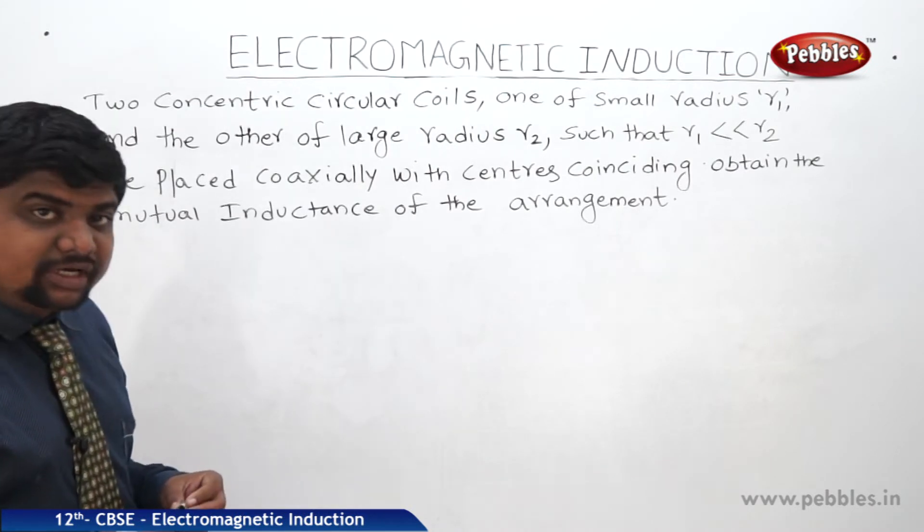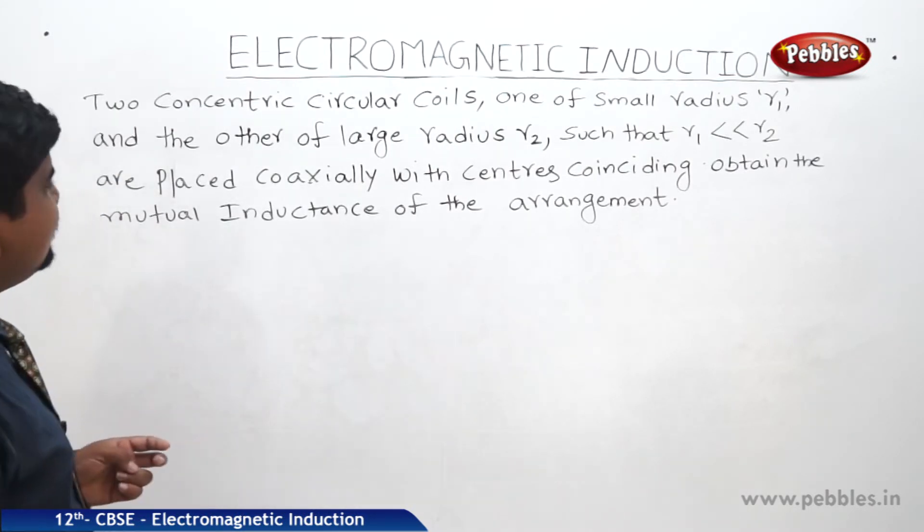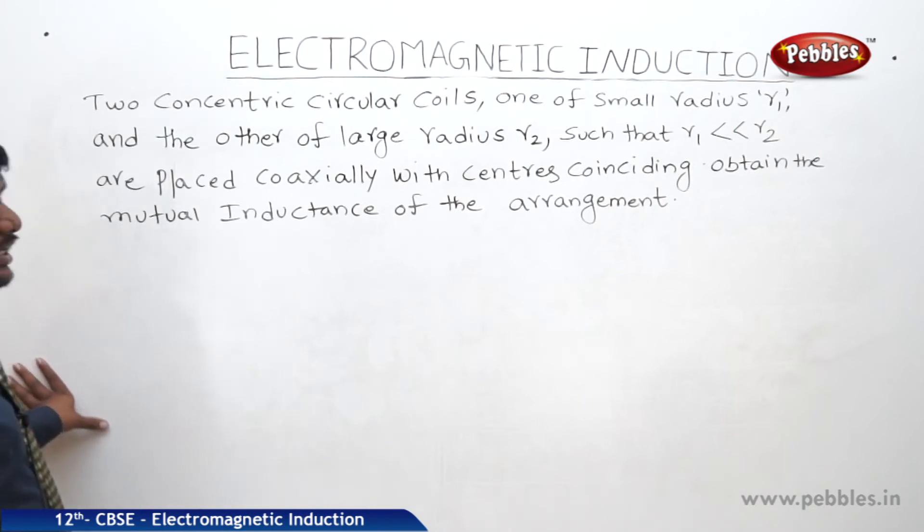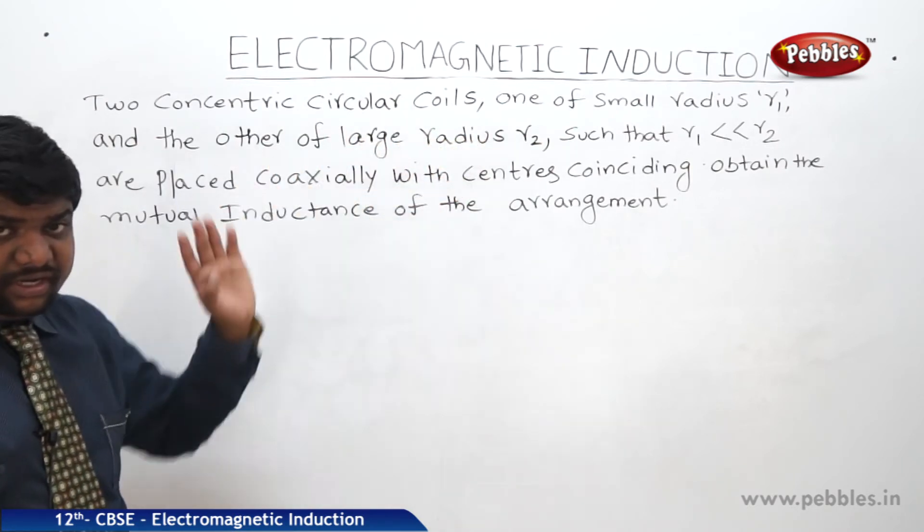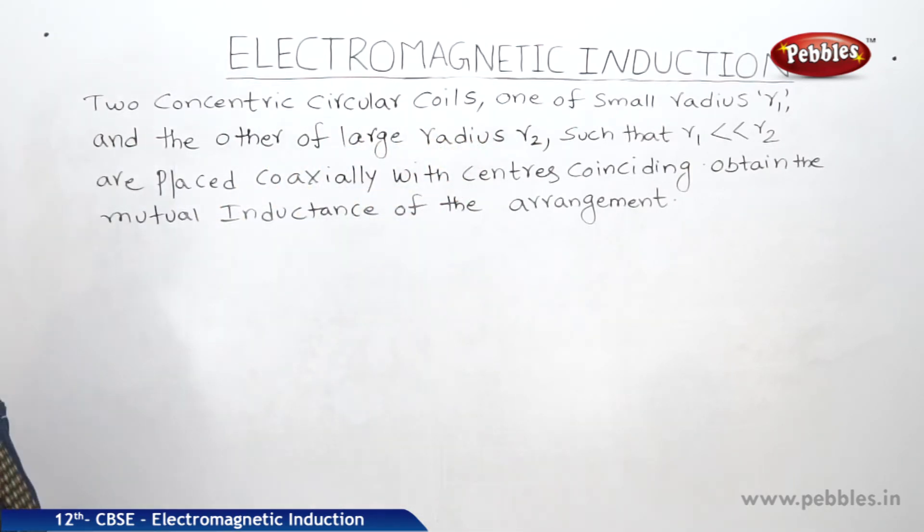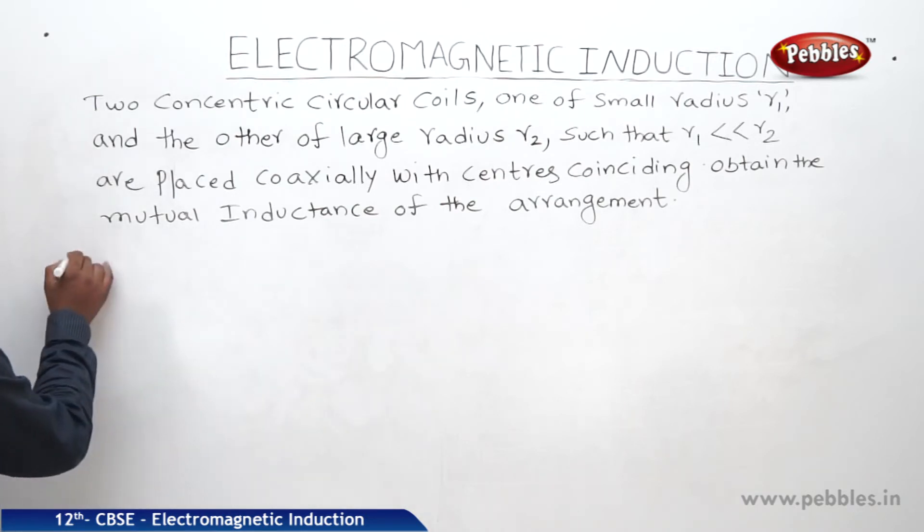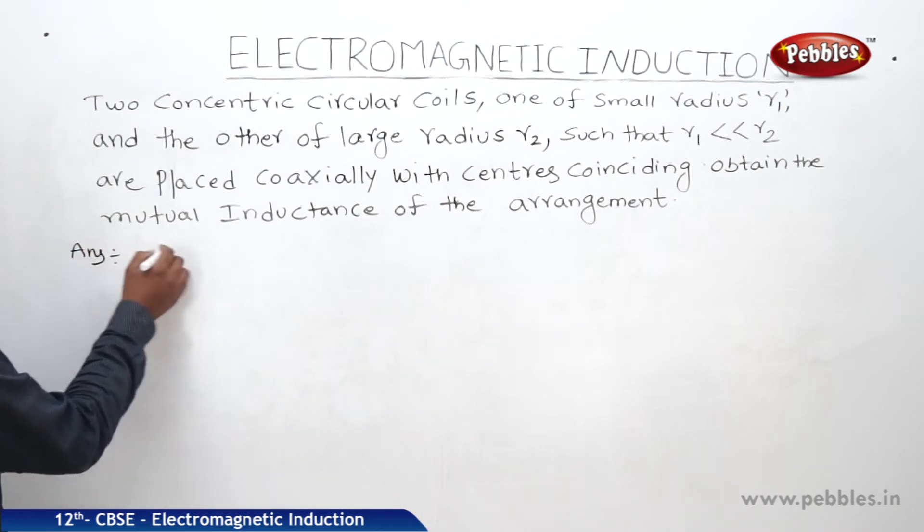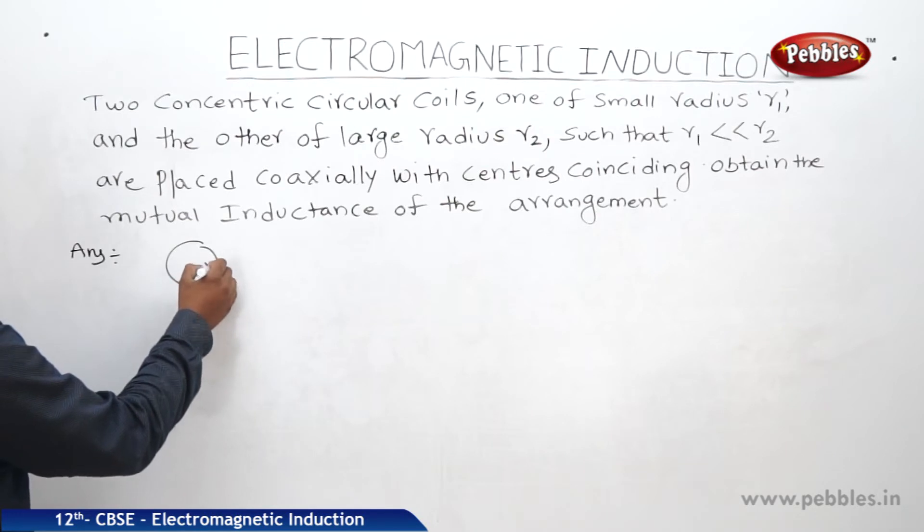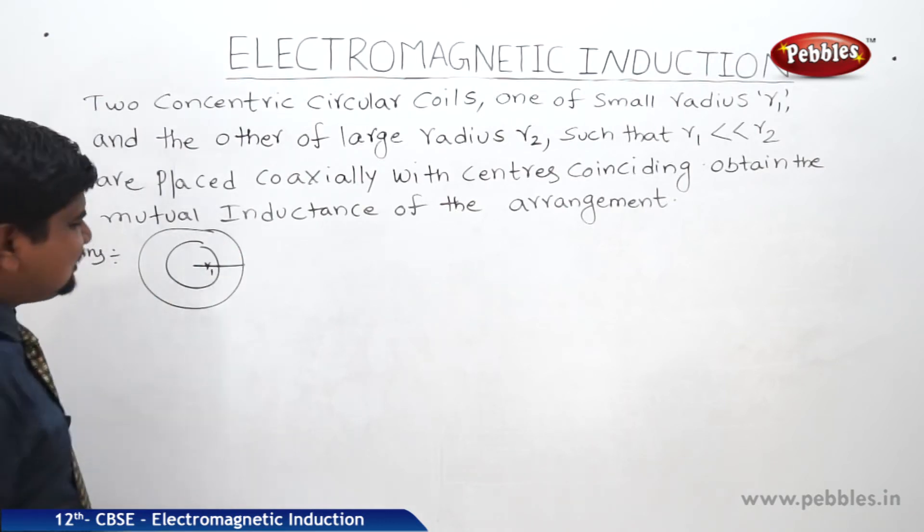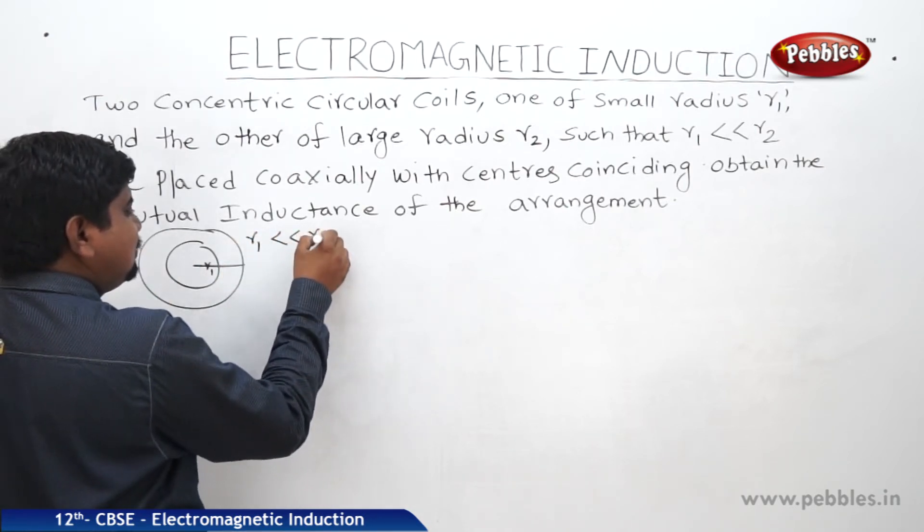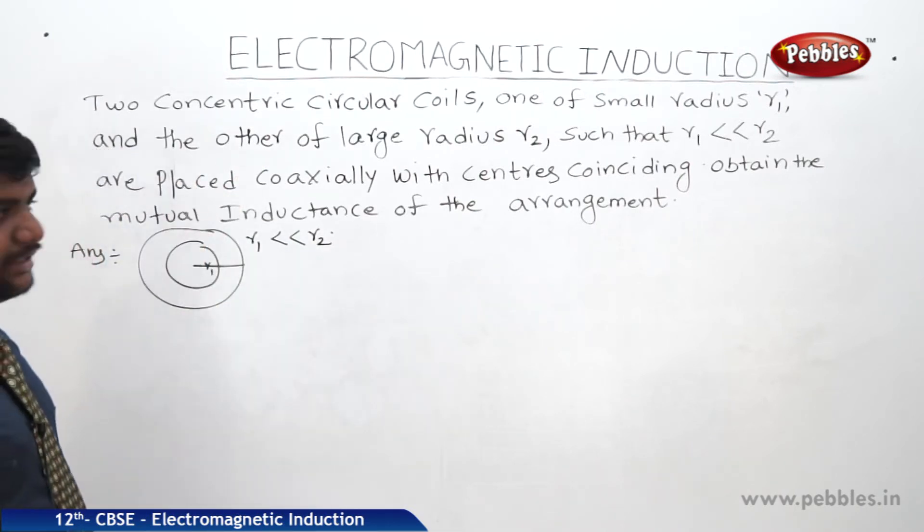Two concentric circular coils means two circular coils which has same center, one of small radius R1 and another of large radius R2 such that R1 is much less than R2, means we can neglect the radius R1 when compared to R2, placed coaxially with the centers coinciding. Obtain the mutual inductance of the arrangement. If this is the case, what is the way to find out the mutual inductance?